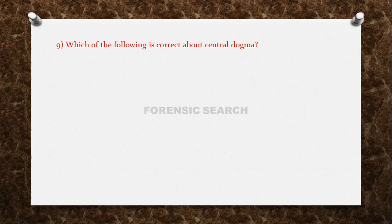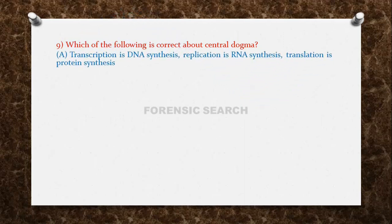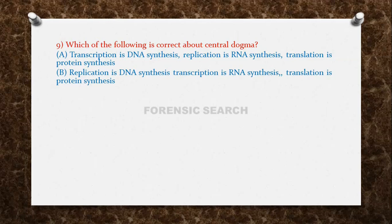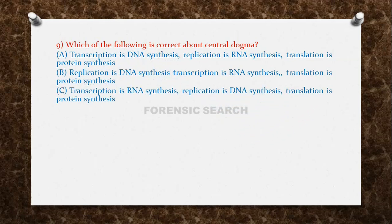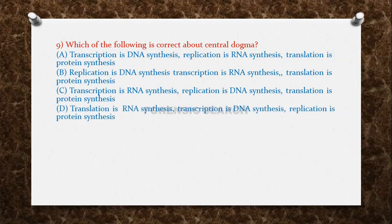The next question: which of the following is correct about the central dogma? Option A: transcription is DNA synthesis, replication is RNA synthesis, and translation is protein synthesis. Option B: replication is DNA synthesis, transcription is RNA synthesis, and translation is protein synthesis. Option D: translation is RNA synthesis, transcription is DNA synthesis, and replication is protein synthesis. The correct answer is option B.